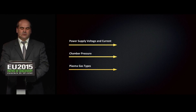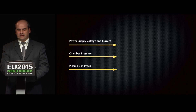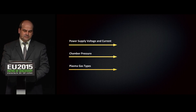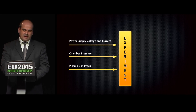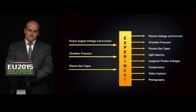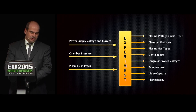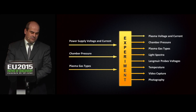The sapphire experiment is based on Monti's analysis of the electric sun model of charged plasma affecting matter of a different electrical potential. We introduce electrical power in the form of voltage and current, then chamber pressure, and plasma gas types. When these factors are introduced into the experiment, we then measure the responses: plasma voltage and current, chamber pressure, plasma gas types, light spectra, linear probe voltages, temperature, video capture, and photography.